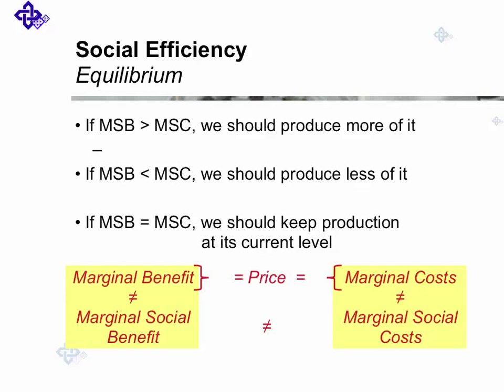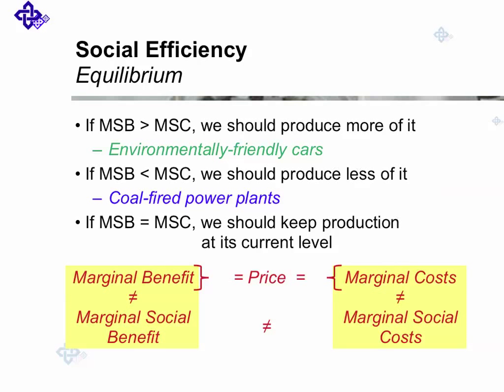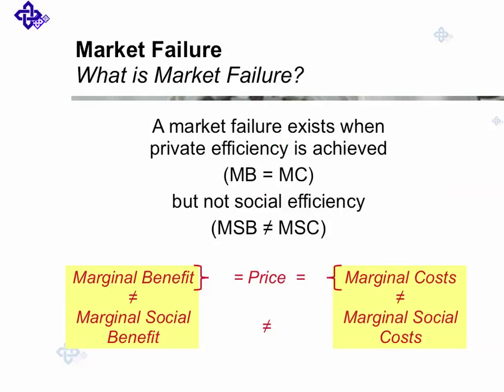If the marginal social benefit is greater than the marginal social cost, we should produce more — environmentally friendly cars, possibly. If the marginal social benefits are smaller than the marginal social cost, we should produce less — coal-fired power plants, for example. If marginal social benefits equal social costs, we should keep production at its current level. If this social equilibrium is not reached through the market mechanism, we say the market fails.